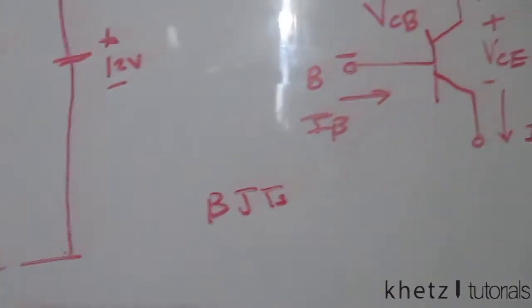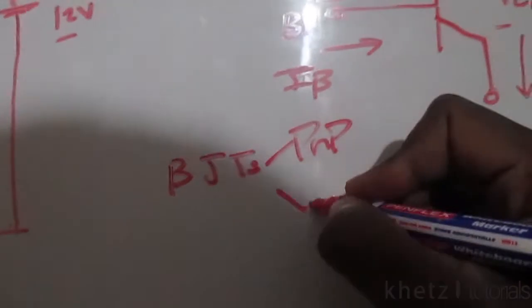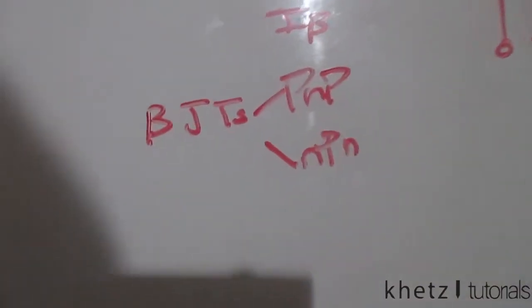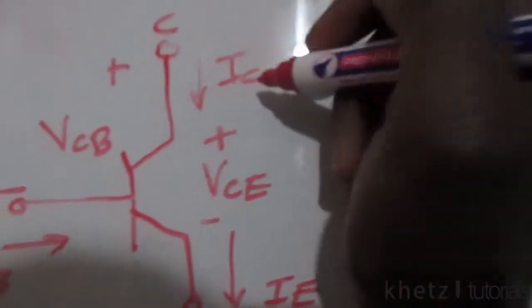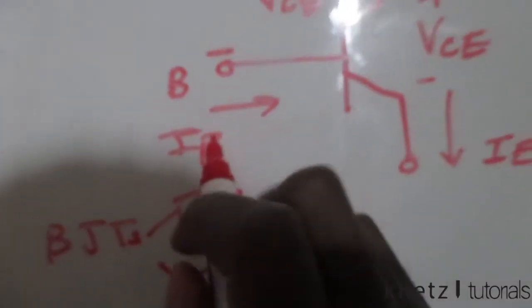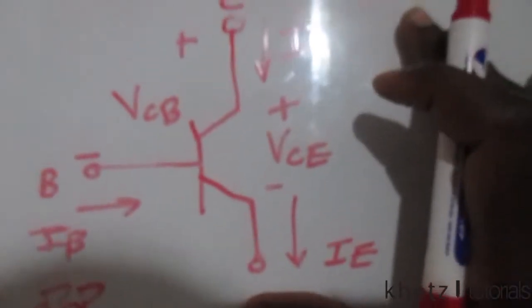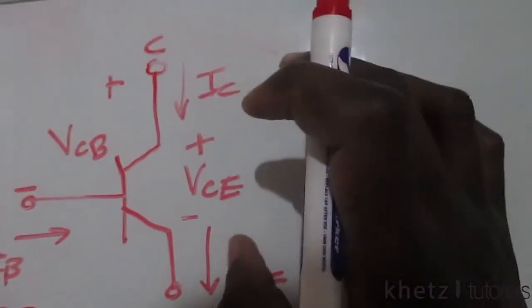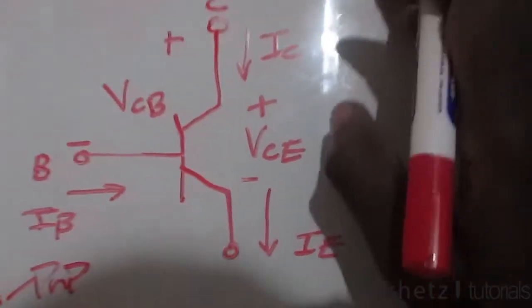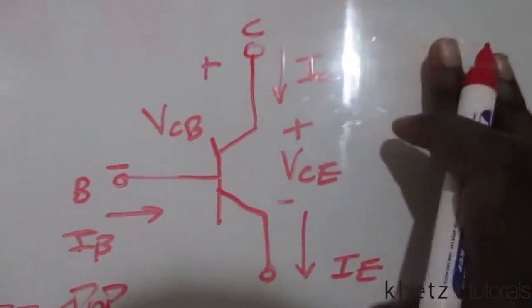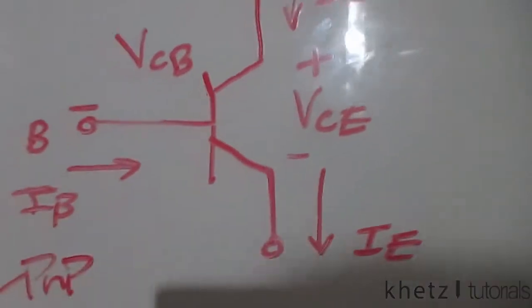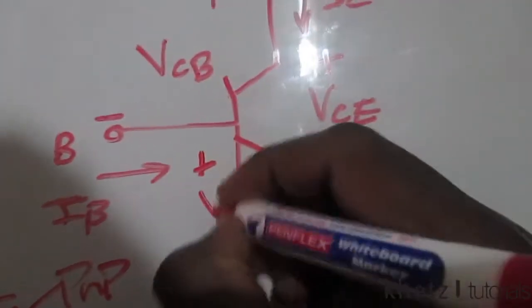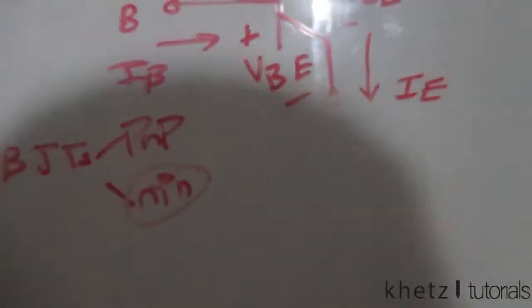BJTs can be further categorized into PNP and NPN types, but our main focus is going to be on NPN. The basic NPN schematic shows current ic from the top, current i_beta from the side, and ie going down at the bottom. There are also mathematical relationships between each of these currents and voltages, including vbe.